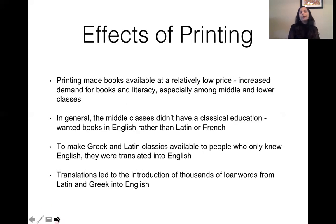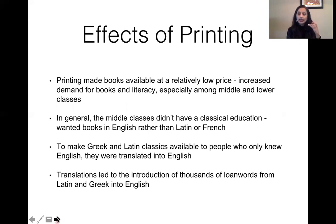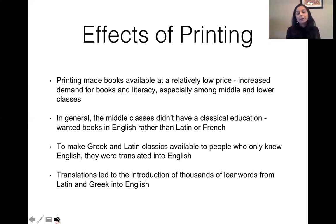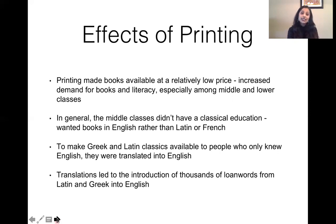When printing presses started printing books, books became available at relatively low prices and literacy started increasing because middle-class people had access to textbooks. Earlier, texts were held in monasteries and then in educational institutions like Oxford and Cambridge, but with the printing press around the 15th century, books became available to the general public. The middle class wanted books in English rather than Latin or French, so many books were translated from Latin and French into English and then printed.